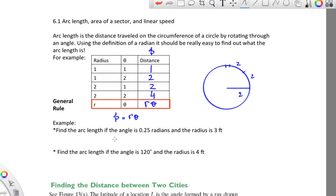For example, find the arc length if the angle is 0.25 radians and the radius is 3 feet. Well, the arc length is 3 times 0.25, which equals 0.75.